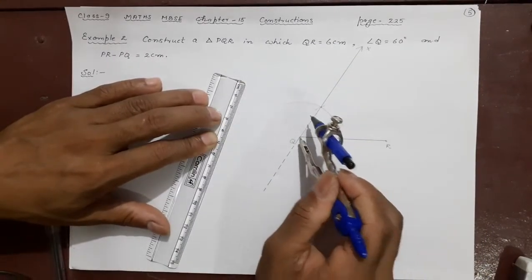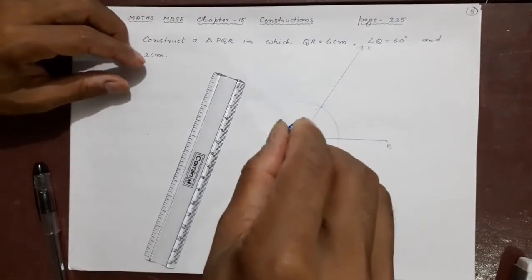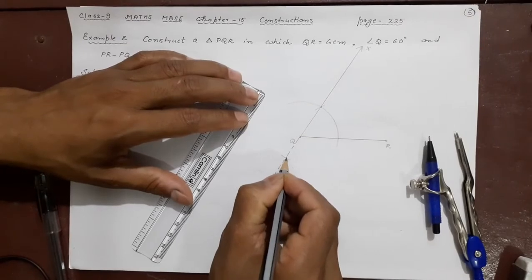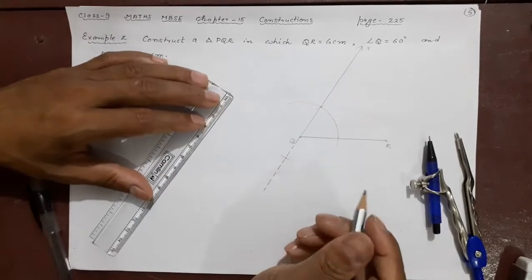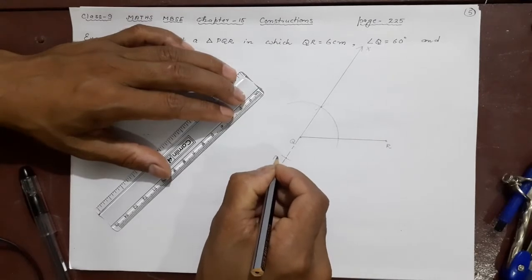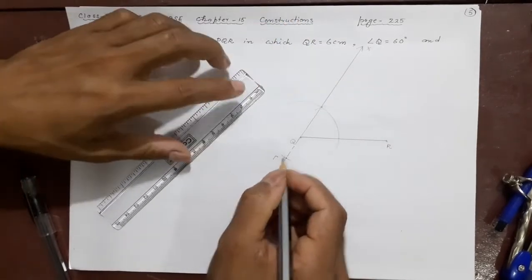And you put it here at Q and cut this side. If it is not cutting you can understand it is here. So that P, that will be P but in our case P is going to come here because it is PQR.